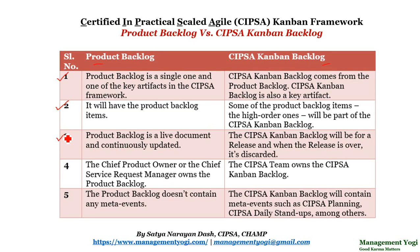Difference number three: the product backlog is a live document and continuously updated — it is not a static document. If new requirements come up, those will be added to the product backlog and prioritization will happen. The SIPSA Kanban backlog, on the other hand, is for a release, and when the release is over this backlog will be discarded.